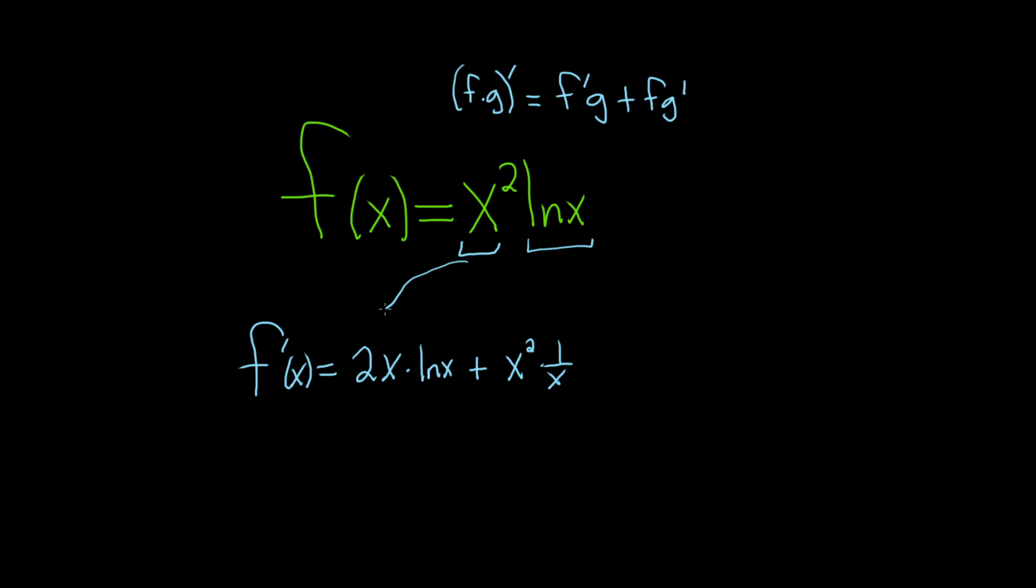Again, the derivative of the first, that's just the power rule. We bring down the 2 and subtract 1, times the second, so the natural log, plus the first one. And then the derivative of ln x, this is a formula, it's just 1 over x.